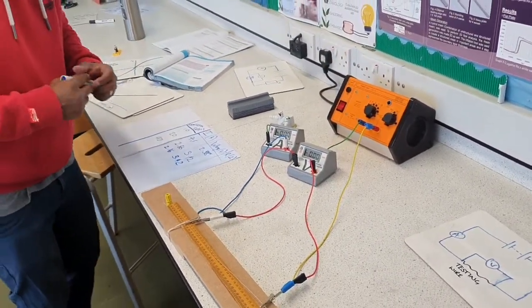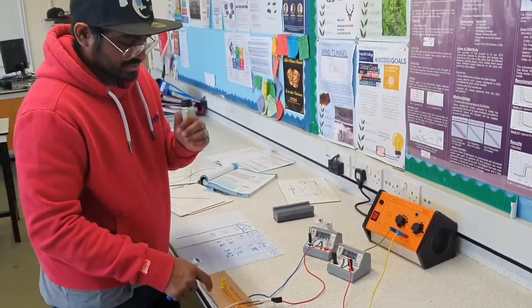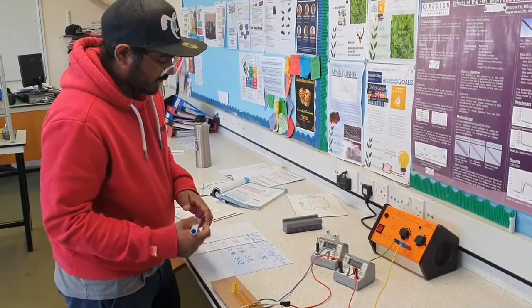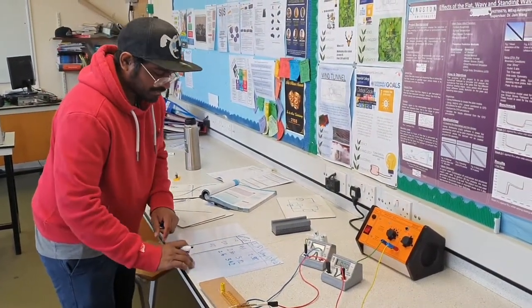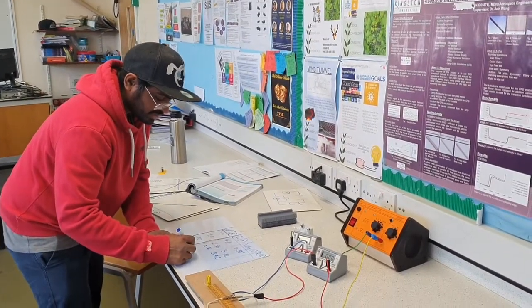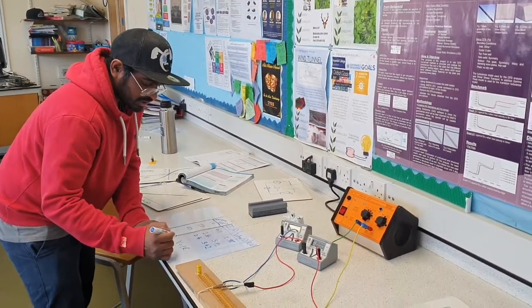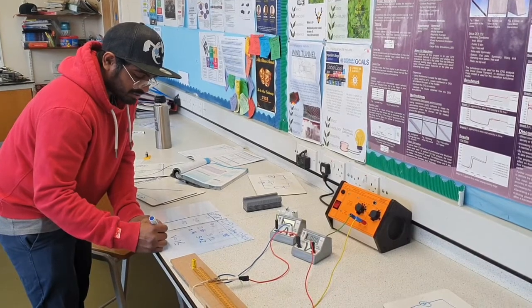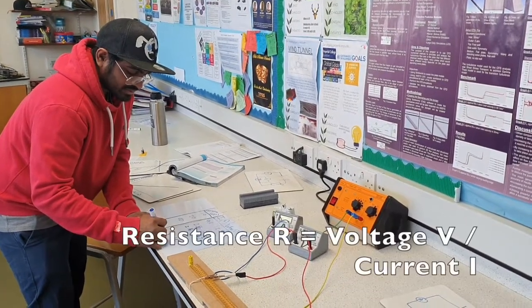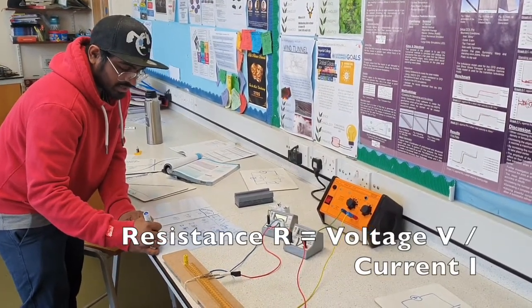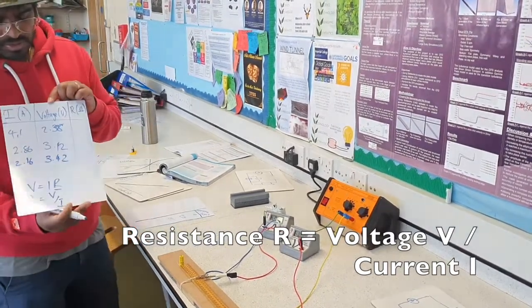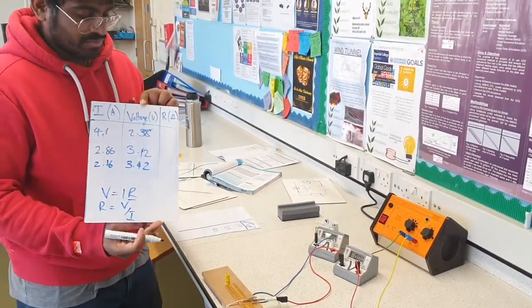So as I mentioned earlier we want to find out how resistance is dependent on the length of the wire. We are going to use Ohm's law: V equals IR. Rearrange the equation to make R the subject where R equals V over I. As we have our values we can find our resistance across that wire.